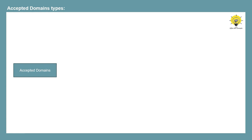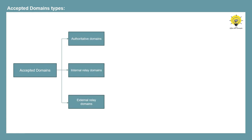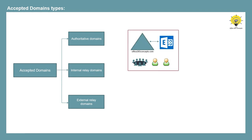In Exchange Server, accepted domains are of three types: authoritative domains, internal relay domains, and external relay domains. When you install Exchange Server, the Active Directory Forest root domain is added as an authoritative domain under accepted domains. Authoritative domain is the domain for which the Exchange organization hosts the mailboxes — meaning all recipients using that domain for their email addresses are hosted on the same Exchange organization. If your domain is added as an authoritative domain and an email is sent to a user not part of your Exchange organization, that email will be rejected.